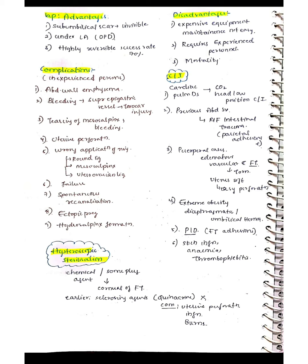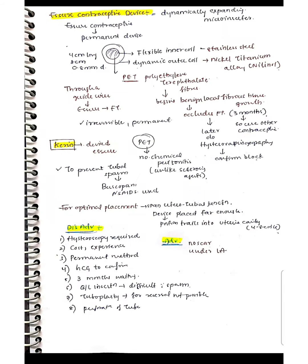The fifth procedure is hysteroscopic sterilization, where a hysteroscope is used to place a chemical agent or plug in the cornual portion of the fallopian tube to block it. Earlier, sclerosing agents like quinacrine were used, but they caused complications including uterine perforation, burns, and infections. Therefore, sclerosing agents are no longer used; chemical agents and plugs are preferred now.